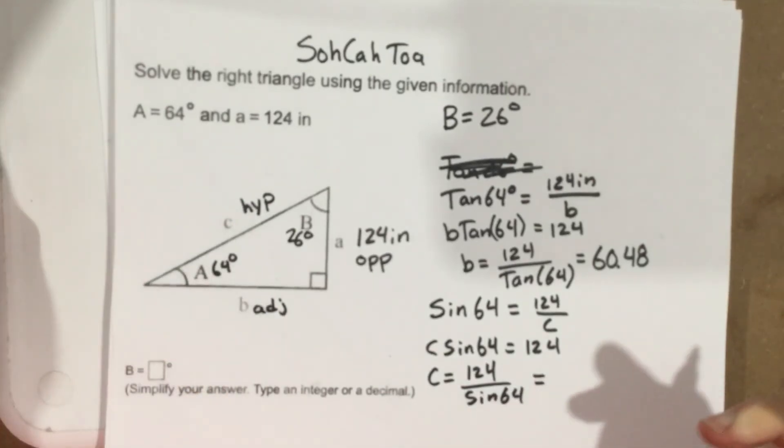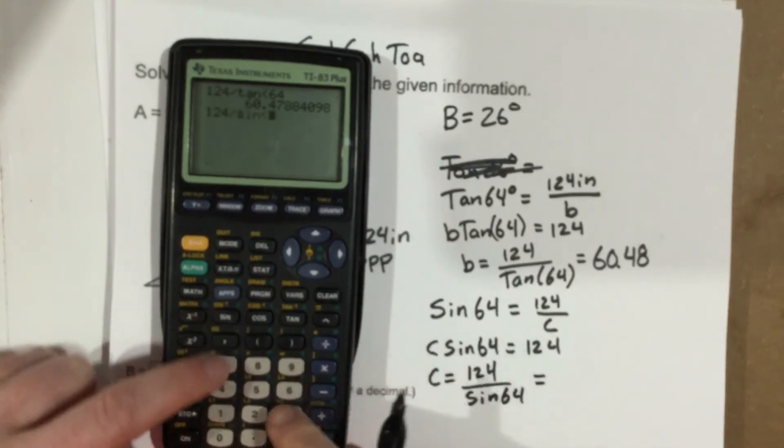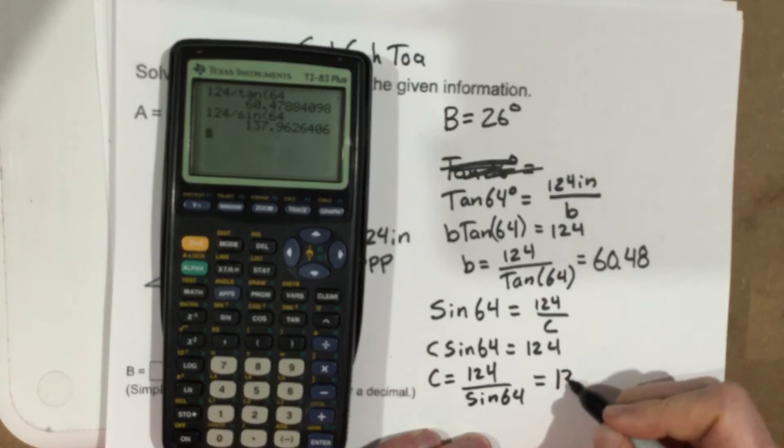And again, plug that in the calculator, so 124 divided by sine 64. This is 137.96.